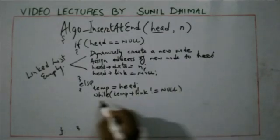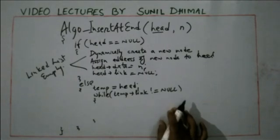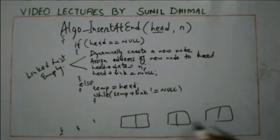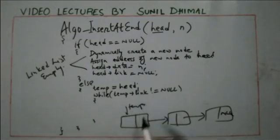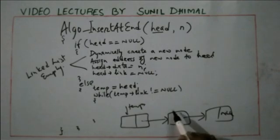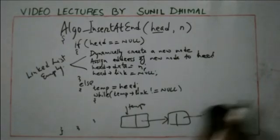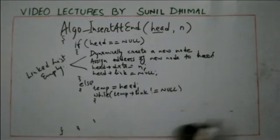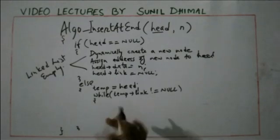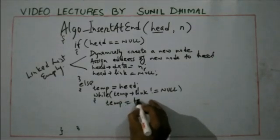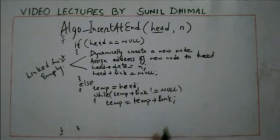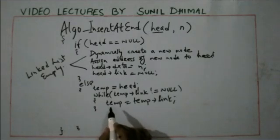We keep on doing this until we find null — until we reach the last node in the list. So we simply do: temp = temp link. Now temp is pointing to the next node. After the while loop completes, temp would be pointing to the last node in the list.